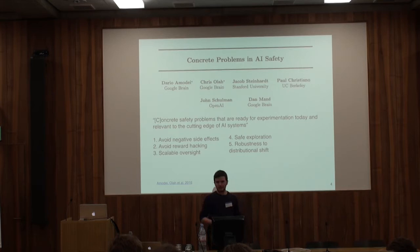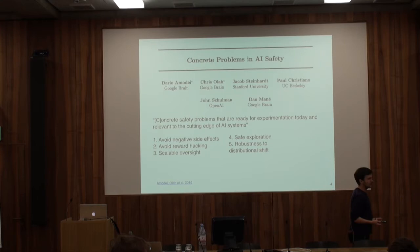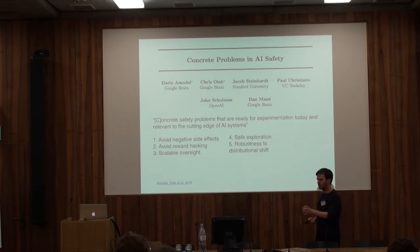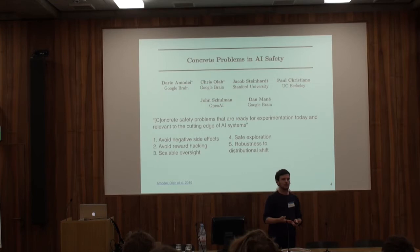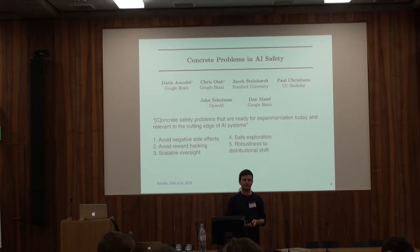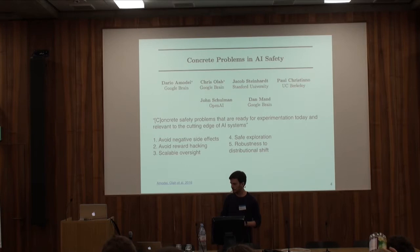The fifth problem is a quite fundamental one: there can be differences between the training environment and the test environment. Even if we have an agent that performs very well and safely in the environment it was trained in, there might be subtle differences when deployed. For example, a cleaning robot trained in an office might encounter additional safety requirements on a factory floor. Can we train agents that perform robustly and safely across a sufficiently wide array of environments?